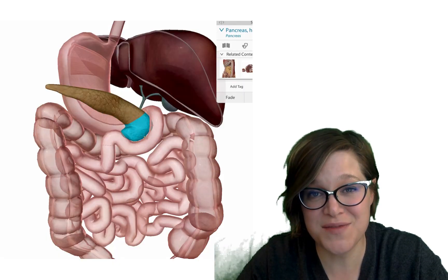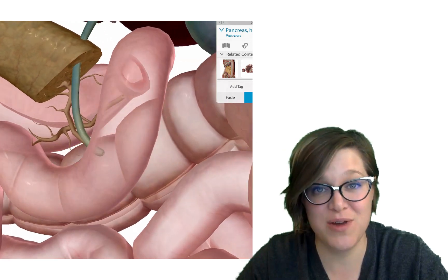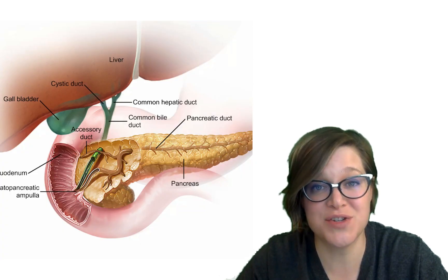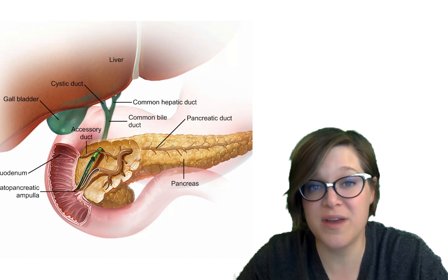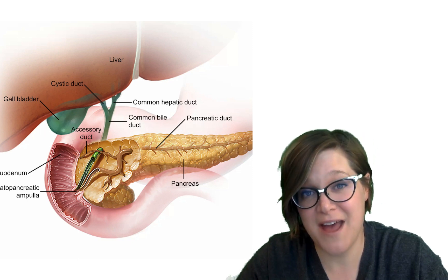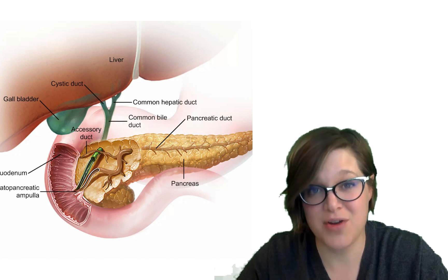How do these digestive juices get into the duodenum? Well, your pancreas has a pancreatic duct and it's going to release its secretions into that duct. That duct is then going to join up with the common bile duct. And that is where they're going to join into the duodenum and empty their contents.